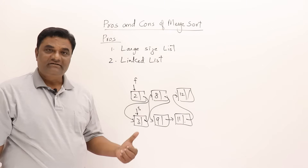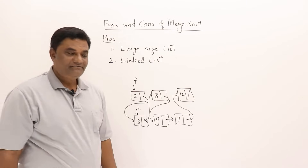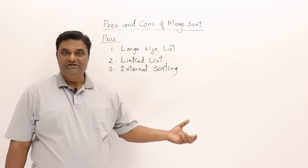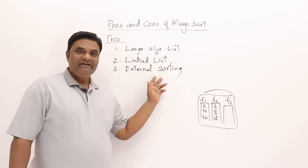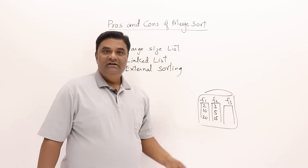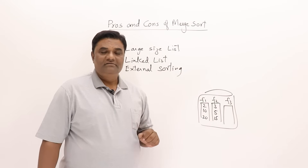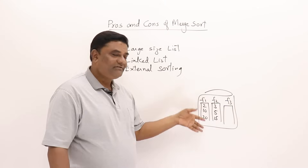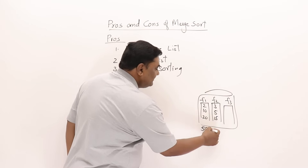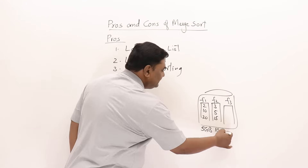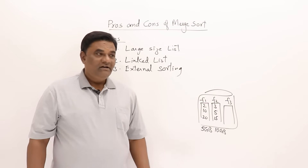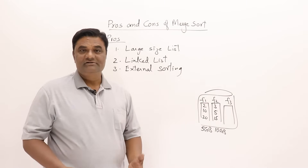Merge sort supports external sorting. The merging process supports external sorting. To explain external sorting: imagine a hard disk with two very large files — one of 5 GB and one of 10 GB — containing millions of records. I want to merge them. Since merge sort is based on merging, it can do this.